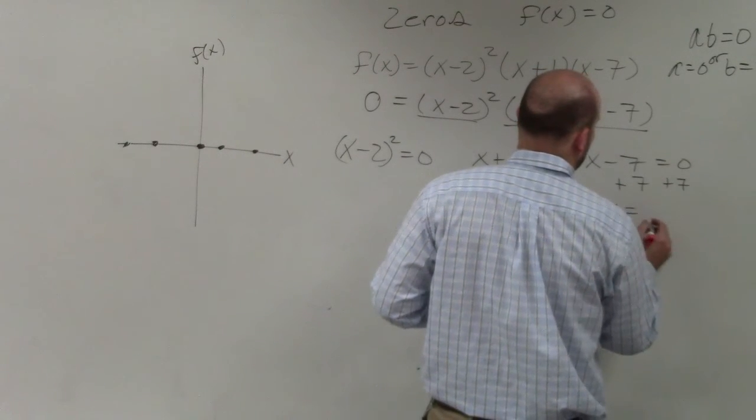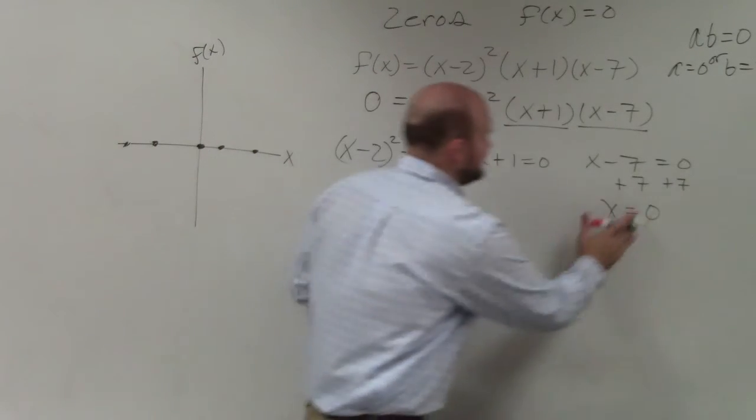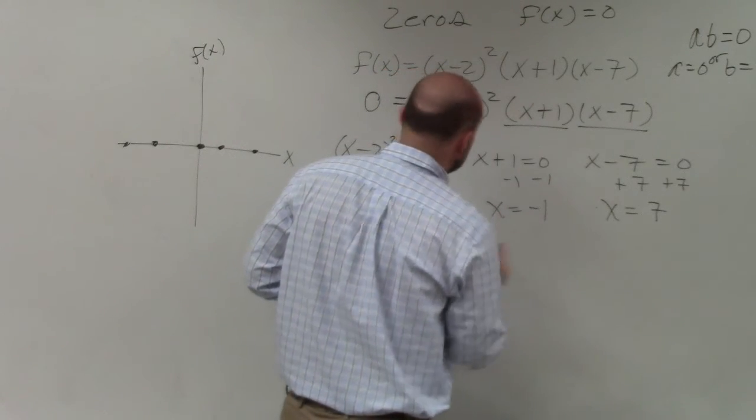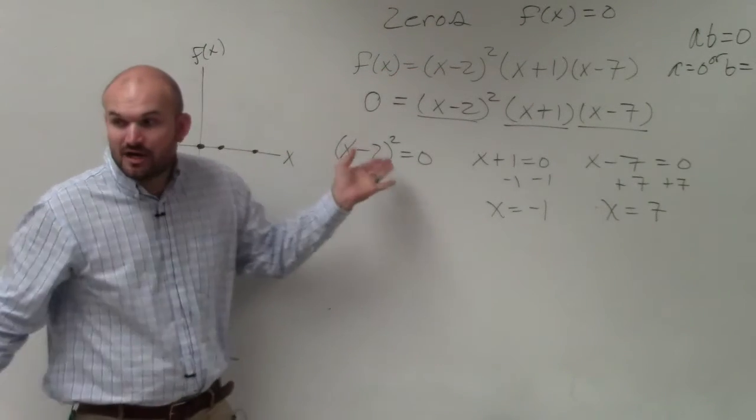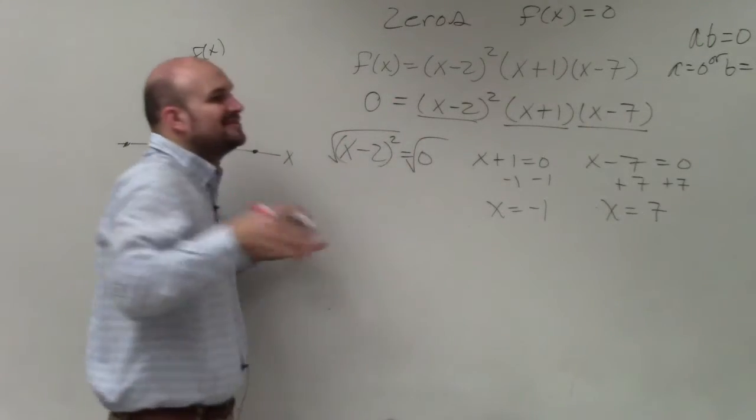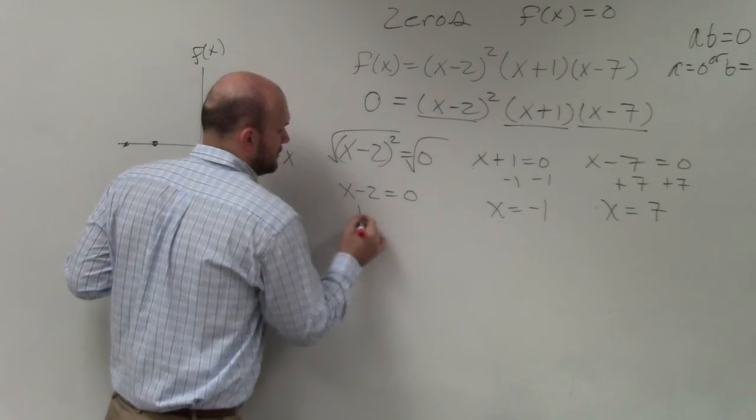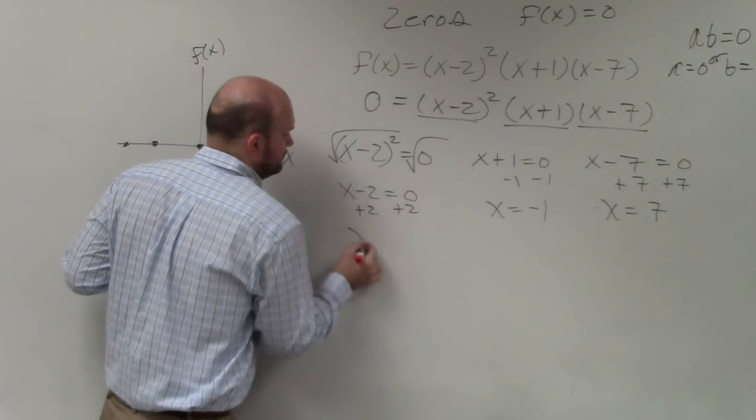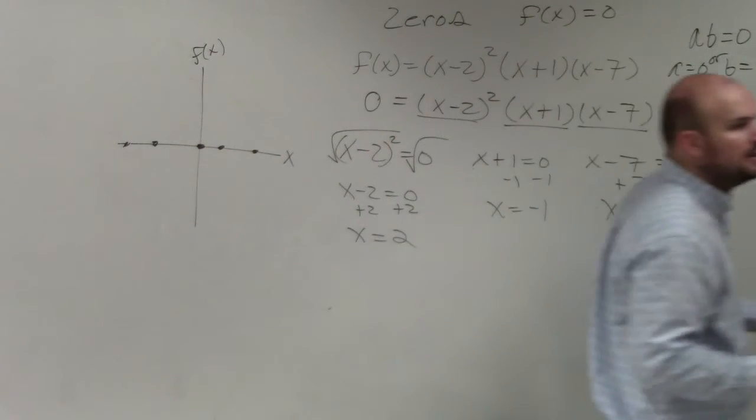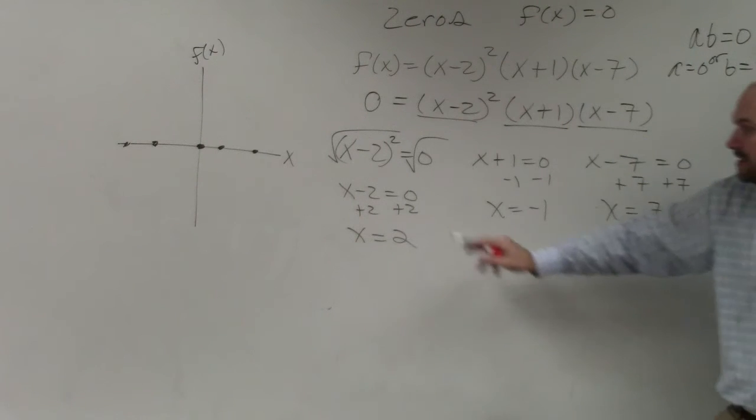Therefore, a zero could be 7. You could have negative 1. Here, we have to undo the squaring function, so I'm going to take the square root of both sides. The square root of 0 is just 0. Right, it makes the equation true. So our solutions that make this equation true are 2, negative 1, or 7.